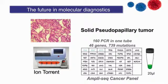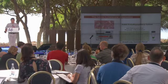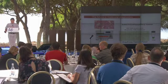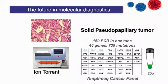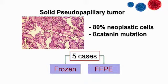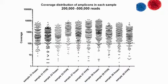What we did is we took a special tumor called solid papillary tumor and used the AmpliSeq Cancer Panel, where you have 160 PCR in one single tube reading 46 genes and more than 700 mutations that are important to cancer. We took the very same five cases, both frozen and paraffin.